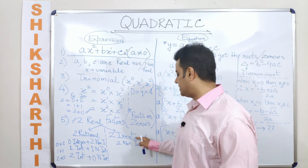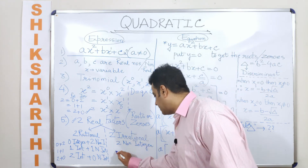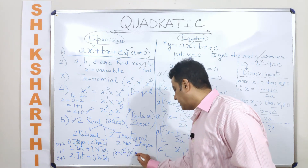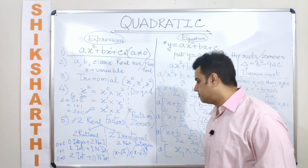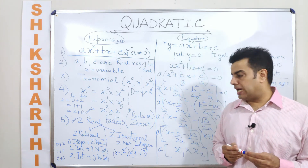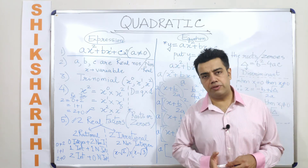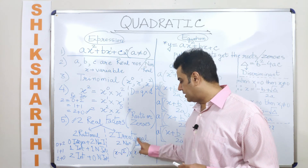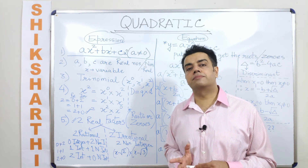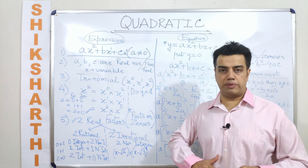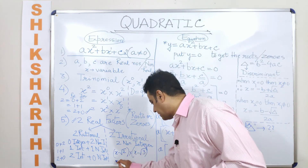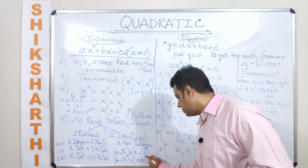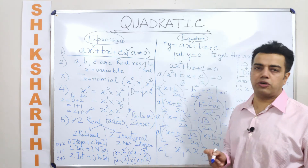Similarly, if I use an example for irrational factors, I can take an easy example like x minus root 2 into x minus root 3. Irrational factors by definition will be non-integers only. So when I am talking about this, I am referring to both of them being irrational factors. Last but not the least, I can also take the example x minus root 2 into x plus root 2 — there is a reason behind this which we will talk about later.